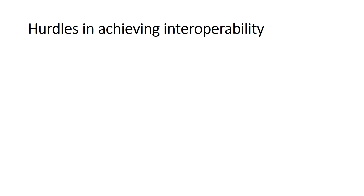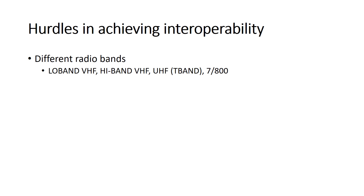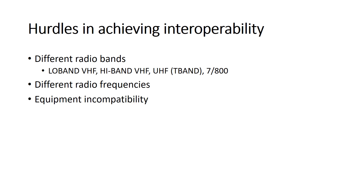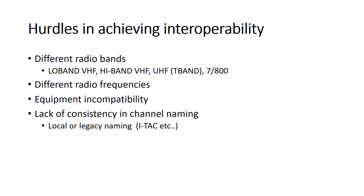There are a number of different obstacles to achieving interoperability. This list includes, but is not limited to, responders operating on differing radio bands. Public safety radio bands include low-band VHF, high-band VHF, UHF including the T-band, and the 700 and 800 megahertz bands. Additional obstacles include responders operating on different radio channels or frequencies, and carrying radio equipment that is incompatible with other public safety systems, or a failure to use a standard naming convention resulting in responders' inability to find the correct channel.